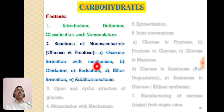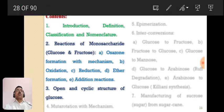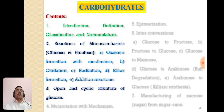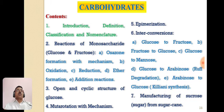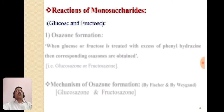The reactions we will cover are: osazone formation with mechanism, oxidation of glucose and fructose, reduction of glucose and fructose, ether formation, and addition reaction. The remaining part of this topic — including the open and cyclic structure of glucose, mutarotation with mechanism, epimerization, and interconversion and manufacture of sucrose from sugarcane — will be covered in the next period. So let us see the reactions of monosaccharides of glucose and fructose.